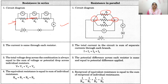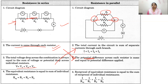In a series combination, the current is the same through each resistor. The equivalent resistance in series combination is R1 plus R2 plus R3. In a parallel combination, 1 by R equals 1 by R1 plus 1 by R2 plus 1 by R3.